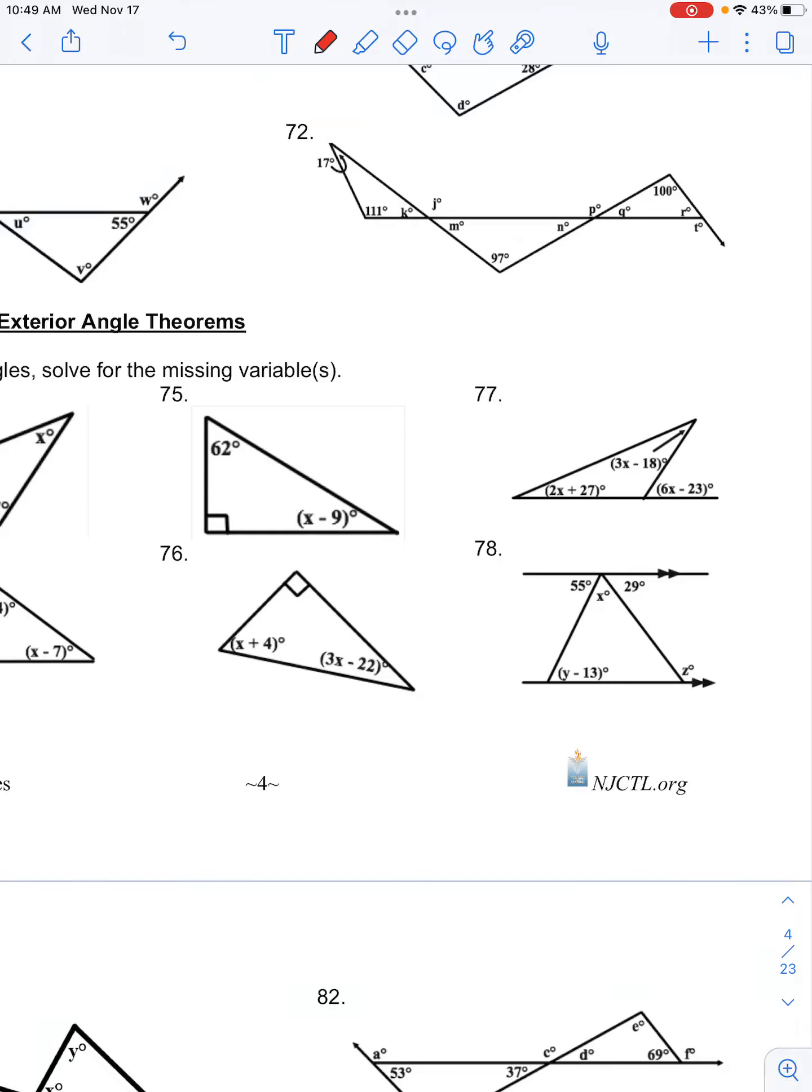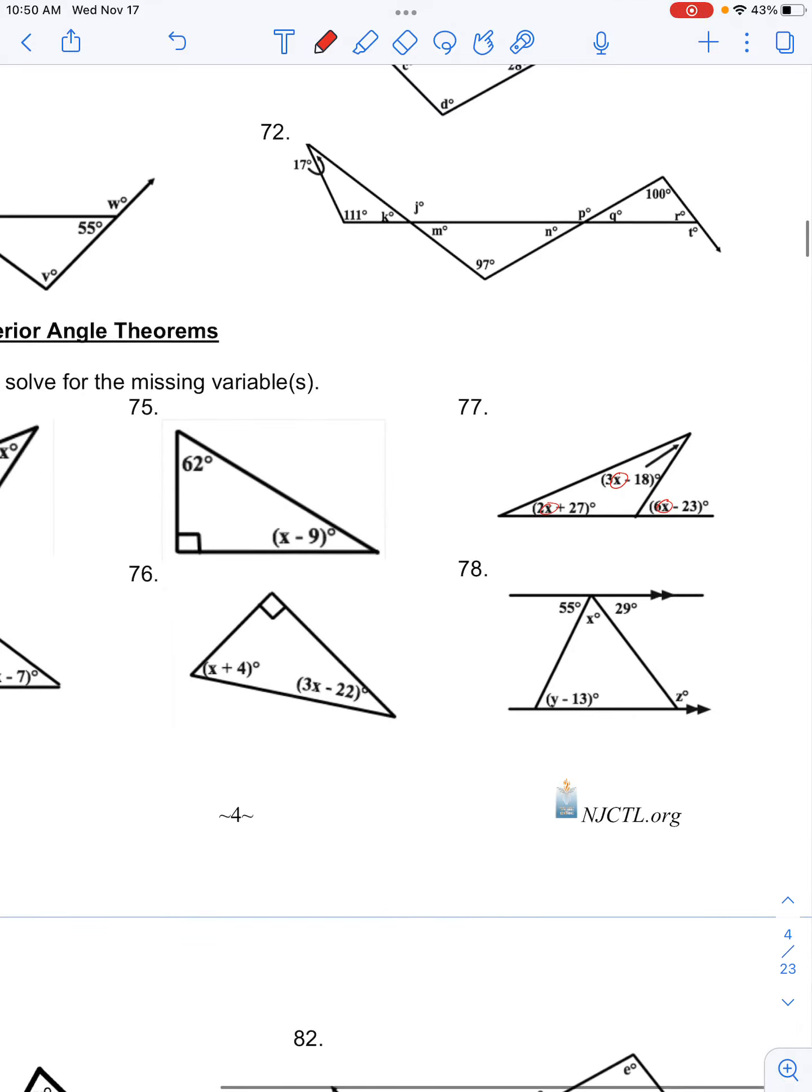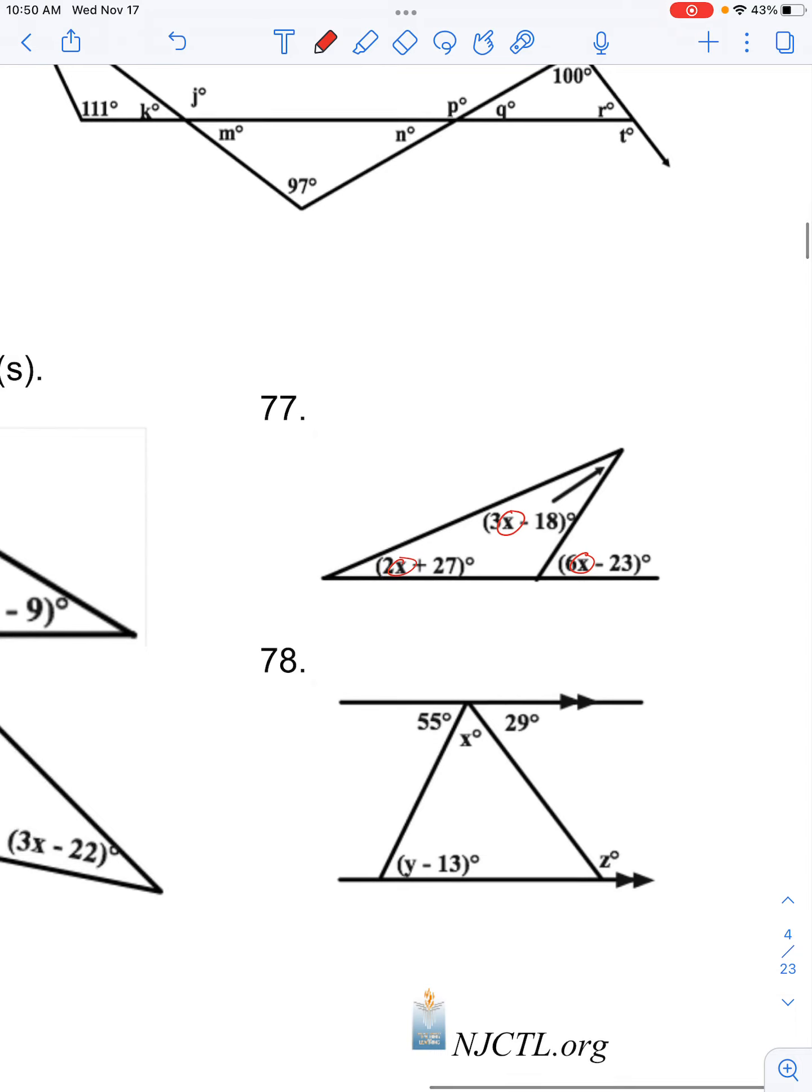Number 77 in your classwork for triangles asks you to find the missing variable. So our variable is x, and we can use the exterior angle theorem to solve our problem.